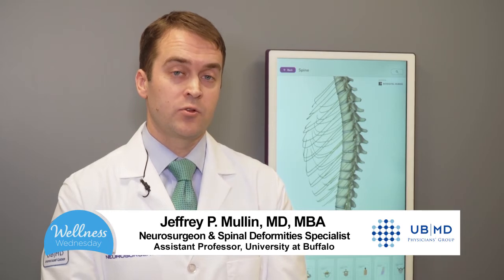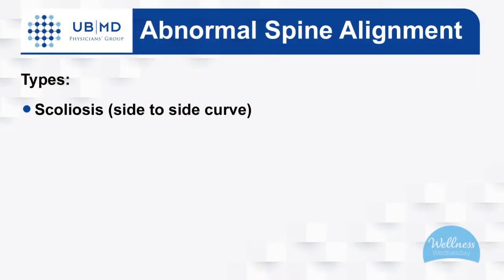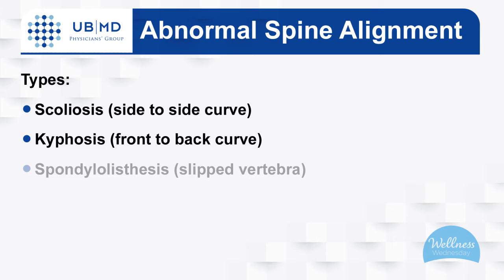Spinal deformity is simply the abnormal alignment of your spine — either the curves in your back from side to side, called scoliosis, or front to back, called increased kyphosis or loss of lordosis. These are also known as flat back deformity. Another type of deformity is called spondylolisthesis, or the slippage of the vertebrae.